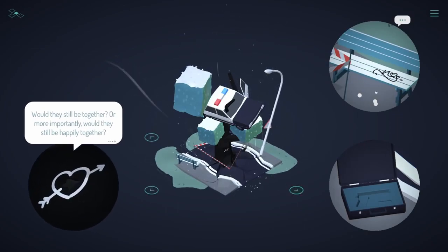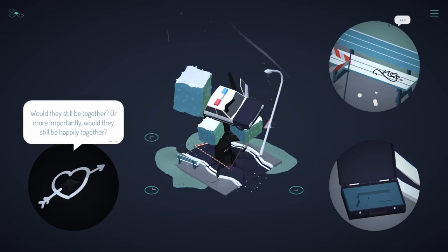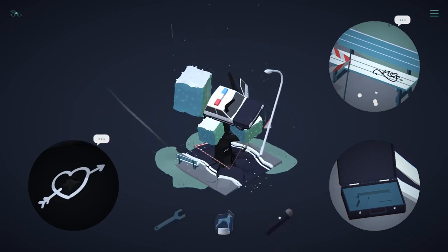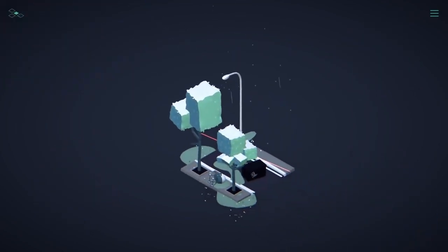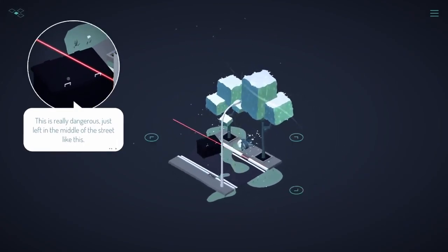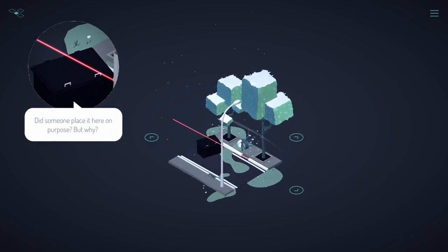Would they still be together? Or more importantly, would they still be happy together? I see a hole, softened round to pit in. This is very dangerous, just left in the middle of the street like this. Did someone place it here on purpose? But why?